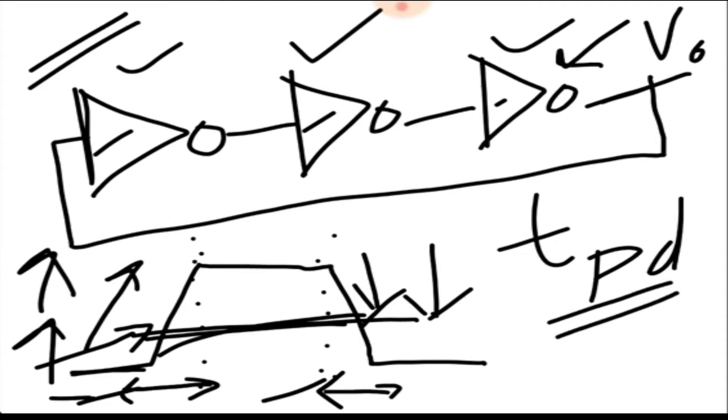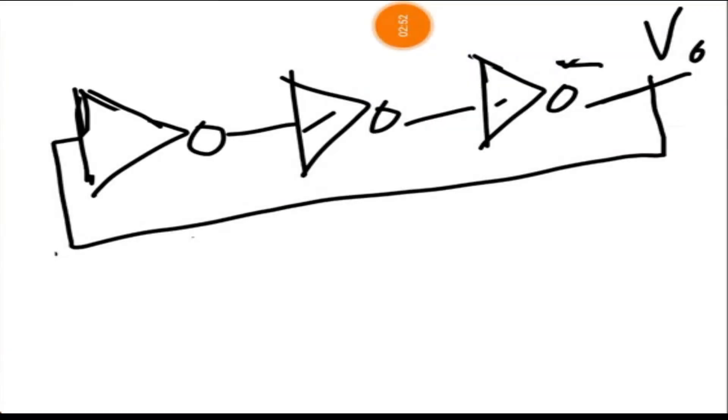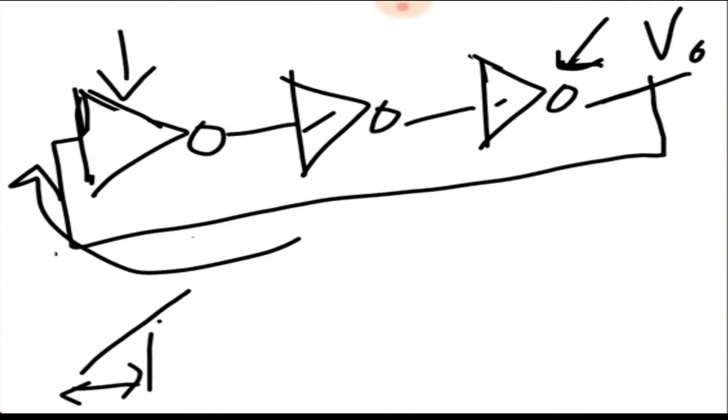Now let's see how this works. The output that is coming out of this is fed to the input. Assume the output goes from low to high. When that happens, it takes a finite amount of time for this inverter to register that the output has gone high, which is the propagation delay TPD. After it has recognized that the input has gone high, the output of this inverter one will go low.